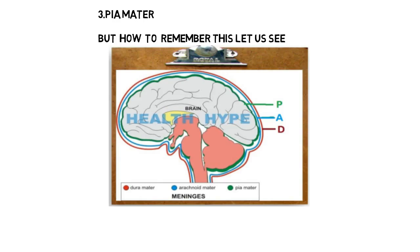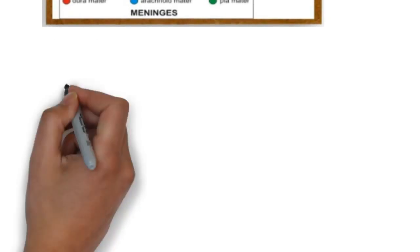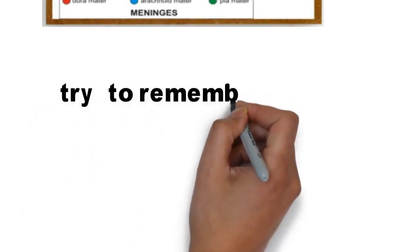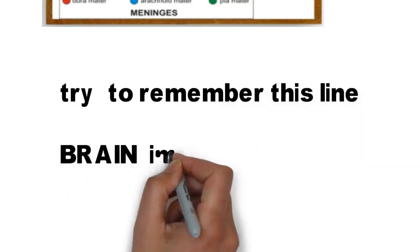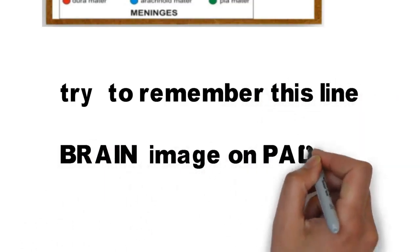The easy way to remember this is: try to remember a brain image on a pad. P for Piamater, A for Arachnoid, D for Duramater. Now we can easily answer the 2 questions: the inner layer is Piamater, and the outer layer is Duramater. Friends, try to remember this one sentence — 'Brain image on pad' — and you will get all 3 layers easily.